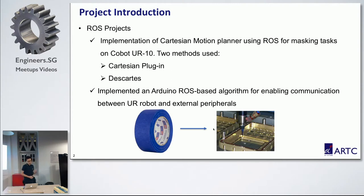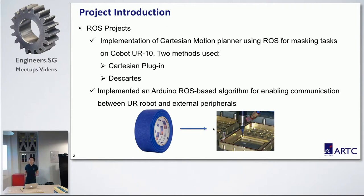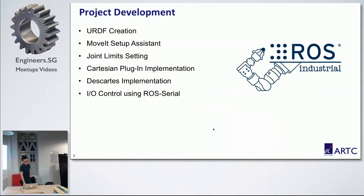Using ROS, I implemented a Cartesian Motion Planner for masking tasks. There are two methods I used: the first one is Cartesian Plug-In and the second one is CART. I also implemented a node-based algorithm for enabling communication between the UR robot and the external paint valves.